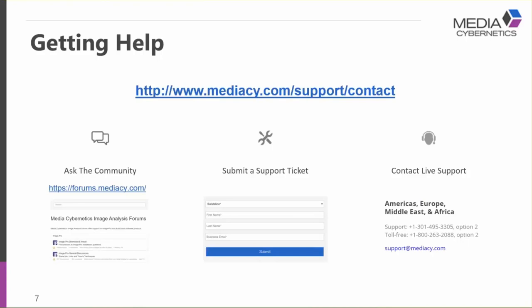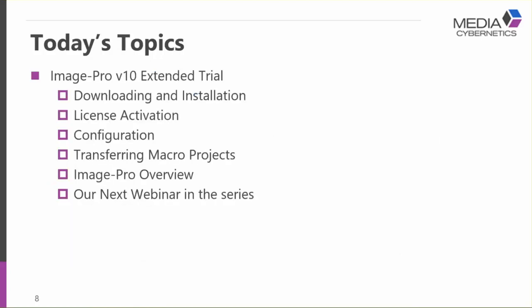For help and support we want to guide you to the support page at mediasci.com. There are three ways to get in touch with us. We highly recommend taking advantage of our live community — at forums.mediasci.com there's a great community of users with answers for any questions about using Image Pro. You can also submit a support ticket, or contact us live. Phone numbers are available for the Americas, Europe, Middle East and Africa regions, as well as Asia and Japan.